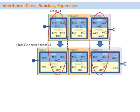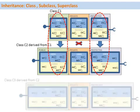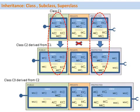Other than that, class C2 can also have additional components of its own. The private components are not inherited at all. Similarly, we can have another class C3 which is derived from C2, and the same thing happens.